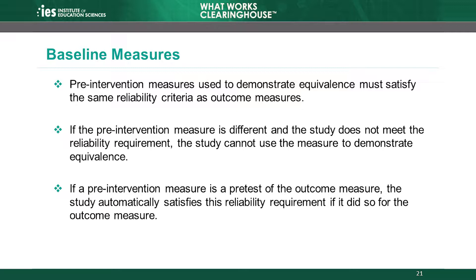If reliability information is unavailable for a pre-intervention measure, or the reliability is below the acceptable level, the study cannot use the measure to demonstrate equivalence. Sometimes, a pre-intervention measure is a pretest score of the outcome measure. In this case, the study automatically satisfies the reliability requirement for the pre-intervention measure if it did so for the outcome measure.